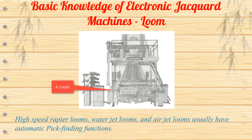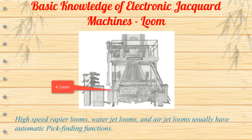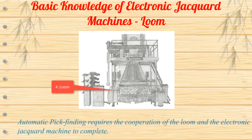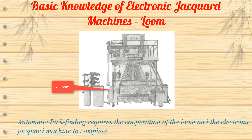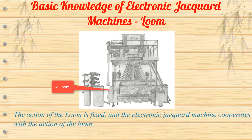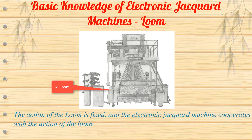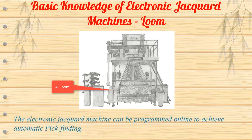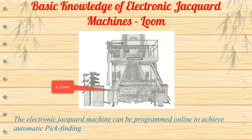High-speed rapier looms, water jet looms, and air jet looms usually have automatic pick-finding functions. Automatic pick finding requires the cooperation of the loom and the electronic jacquard machine. The action of the loom is fixed, and the electronic jacquard machine cooperates with the loom's action. The electronic jacquard machine can be programmed online to achieve automatic pick finding.